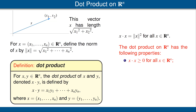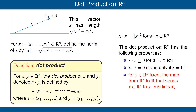Now let's look at some easy properties of the dot product. If x is a vector in Rn, then x dot x is bigger than or equal to zero. We also see that x dot x is equal to zero if and only if x is the zero vector. Here's a crucial property: if we fix a vector y in Rn, then the map from Rn to R that sends x to x dot y is linear. This is the reason we introduced the dot product — we're bringing some linearity back into the picture. And the final easy property: if x and y are vectors in Rn, then x dot y is equal to y dot x. In other words, the dot product is commutative.